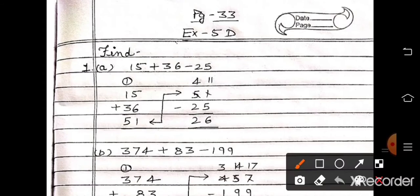So 51 minus 25. 1 minus 5 is not possible, so take borrow. 11 minus 5 is 6, and 4 minus 2 is 2. So the answer is 26.